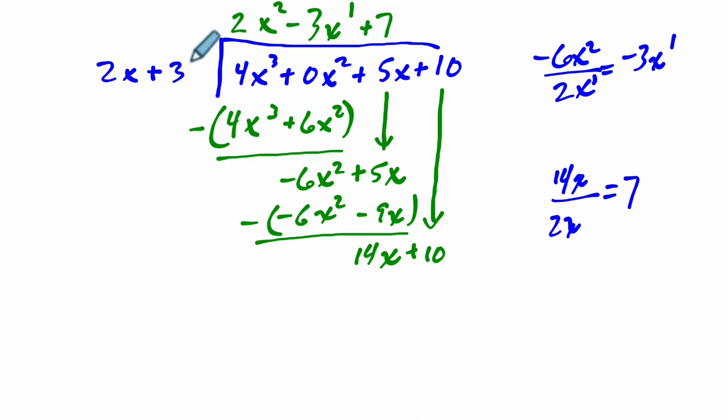And the question is, is the product of these two things, does it equal 4x³ plus 5x plus 10? To figure it out, multiply 7 by the divisor. So 7 times 2x is 14x, and 7 times 3 is 21. And we are subtracting these two things. 14 minus 14 is 0. 10 minus 21 is negative 11.